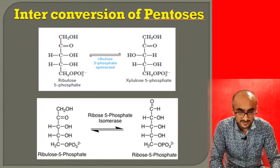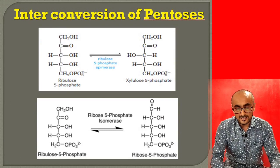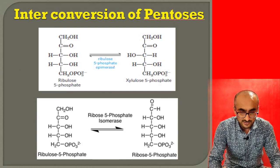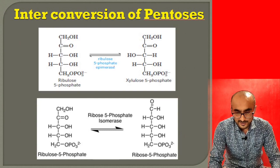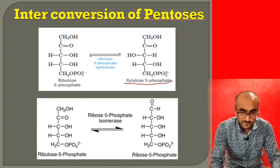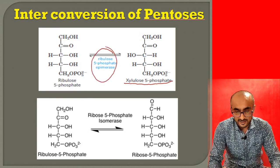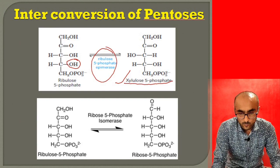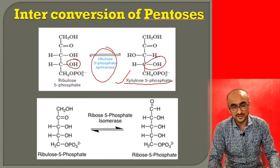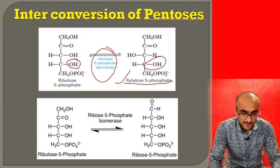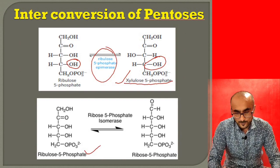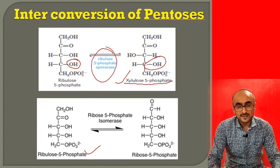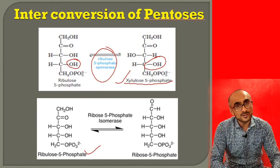The synthesized ribulose-5-phosphate, a pentose sugar, can be converted into other pentoses by epimerase and isomerase reactions. In one reaction, ribulose-5-phosphate is converted into xylulose-5-phosphate by epimerase — these two are epimers, differing by the position of a single hydroxyl group. In another reaction, ribulose-5-phosphate is isomerized into ribose-5-phosphate by ribose-5-phosphate isomerase. These pentose sugars then react with each other in the non-oxidative phase.